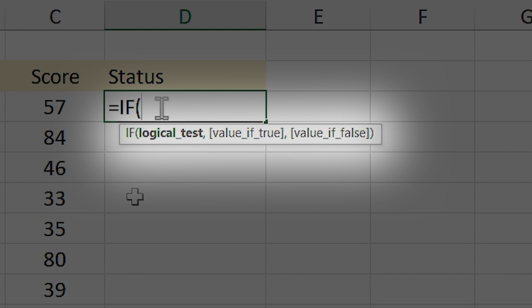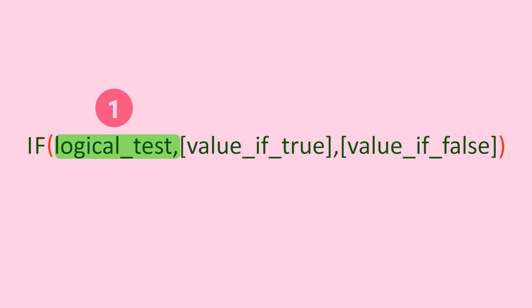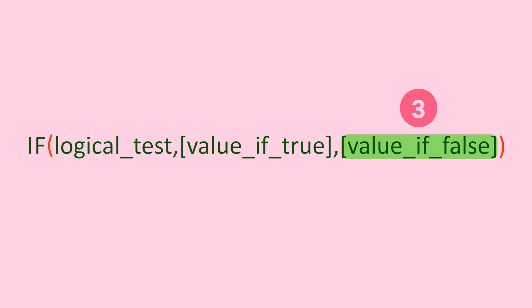You can see the argument — let me explain it step by step. In the first part of the argument you have to specify your condition. In the second part you need to define what Excel should show if the condition is true. And in the third part you have to determine what Excel should return if the condition is false.